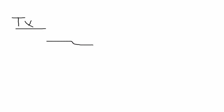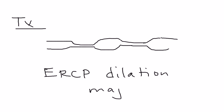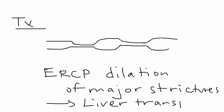For treatment, the strictures need to be dilated if possible to restore proper bile duct function, and this is done via ERCP dilation of major strictures. Eventually the disease becomes too difficult to manage and requires liver transplant, which is the only treatment that truly improves life expectancy.